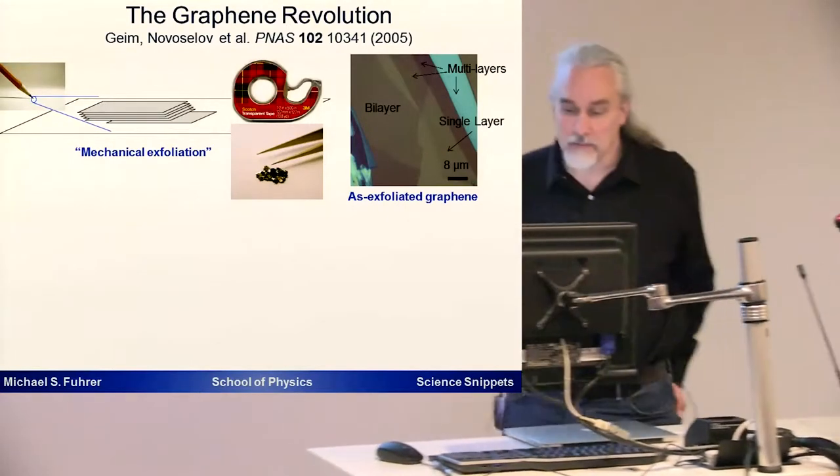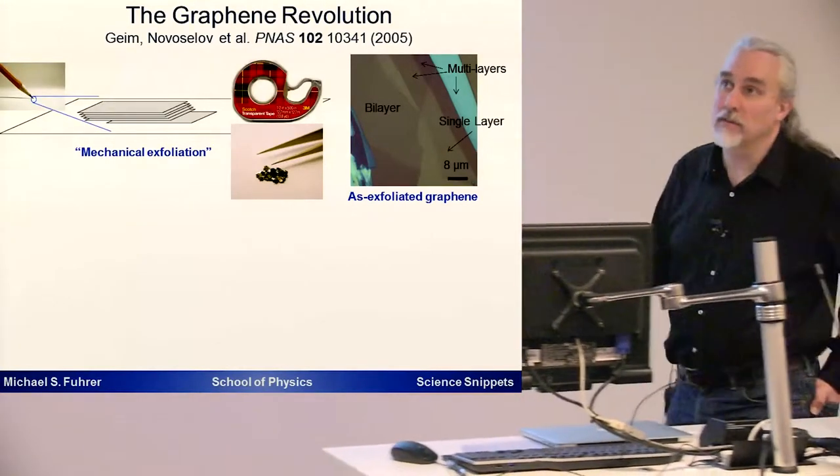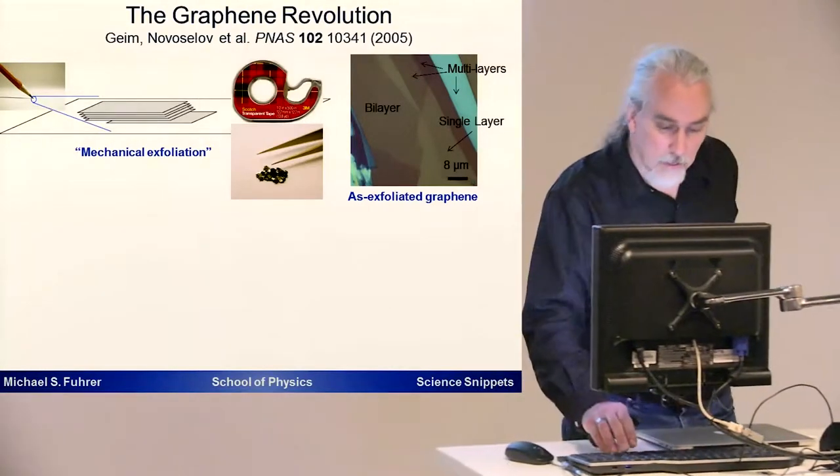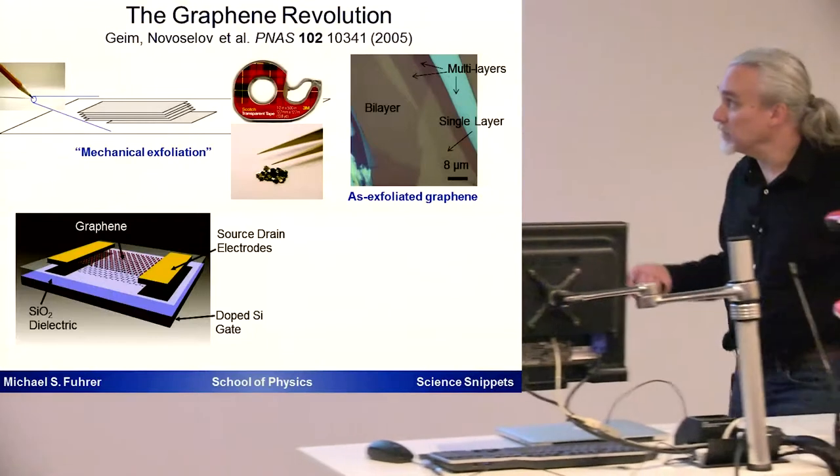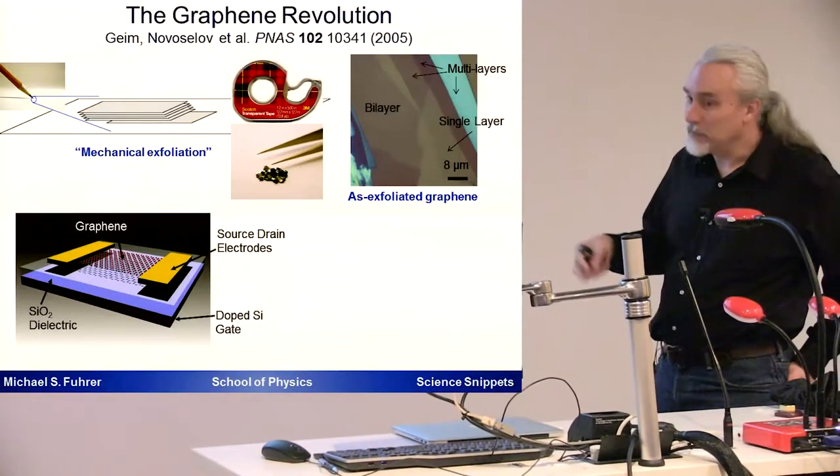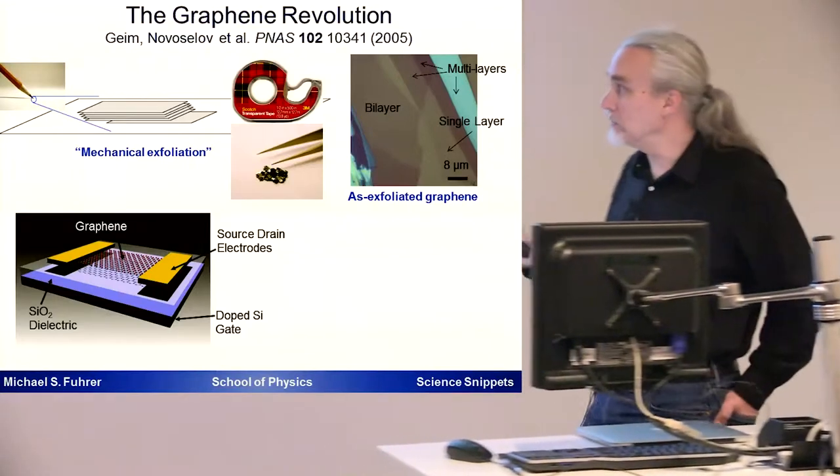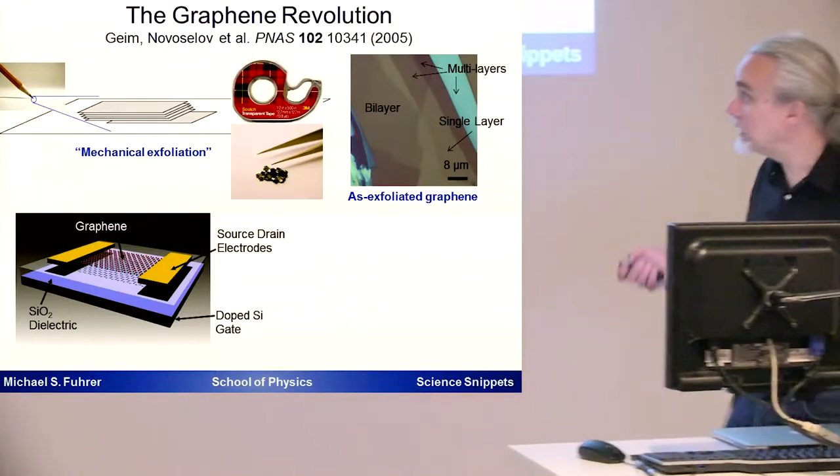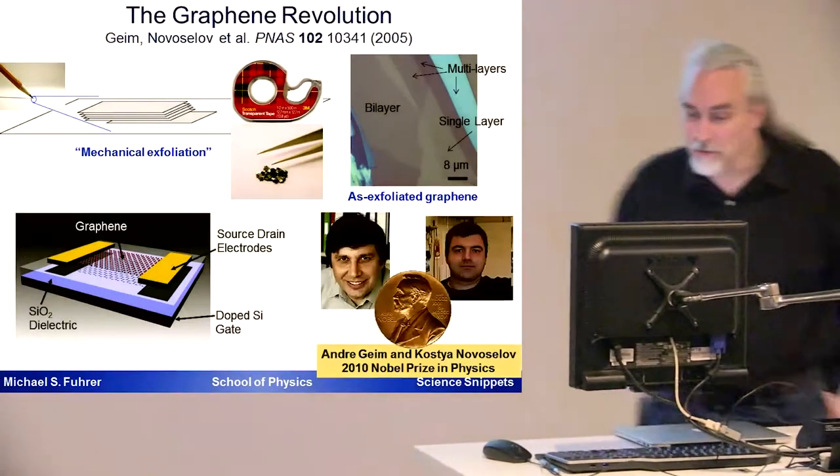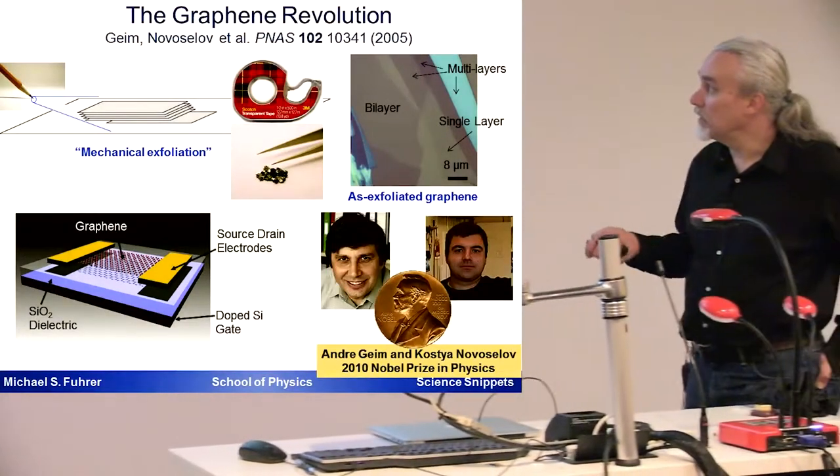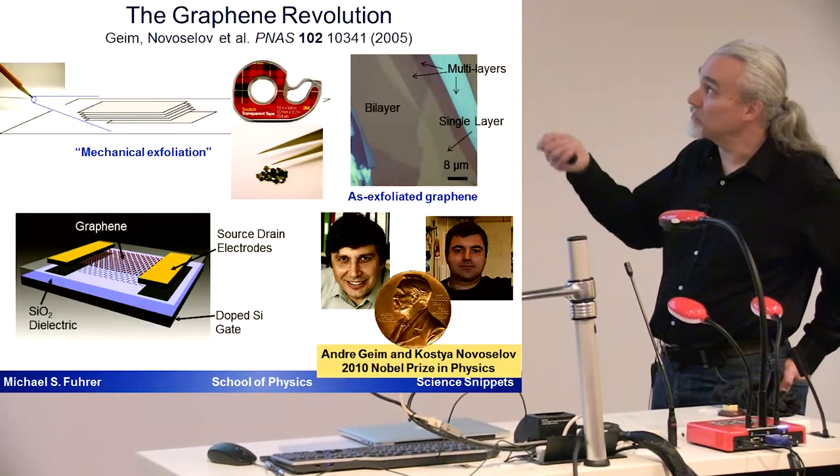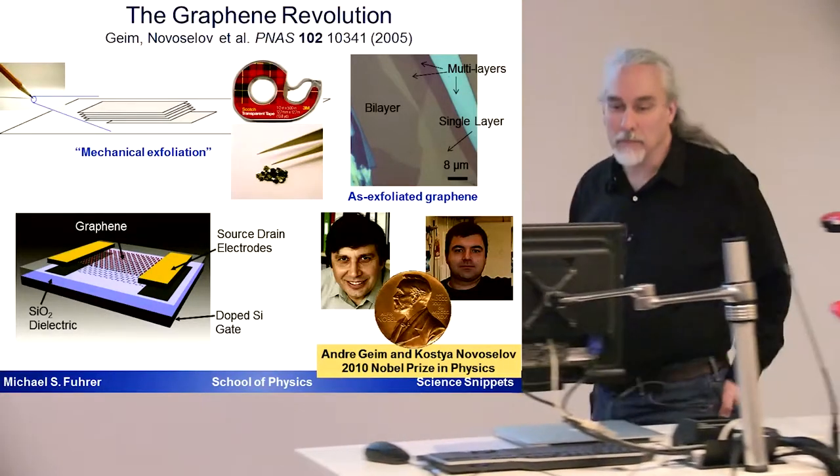This is the bare silicon dioxide. This is bilayer etc. So we can actually find these single layers and then we can use the tools that are used in the semiconductor industry to make micro devices to make little graphene devices where we have metal electrodes contacting our graphene so we can run currents through it and do electrical experiments on it. And experiments on devices like this resulted in the Nobel Prize in Physics in 2010 for Andrei Geim and Kostya Novoselov who developed this technique of using scotch tape to make graphene.